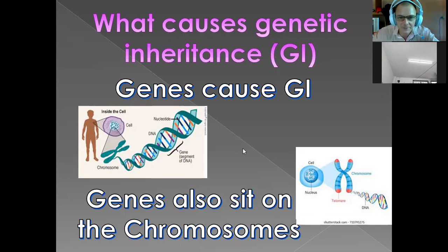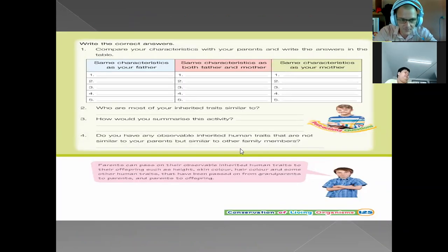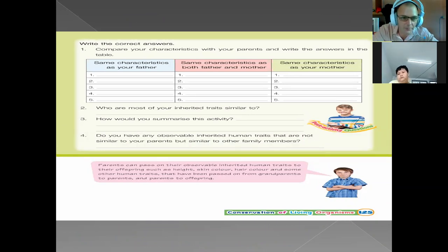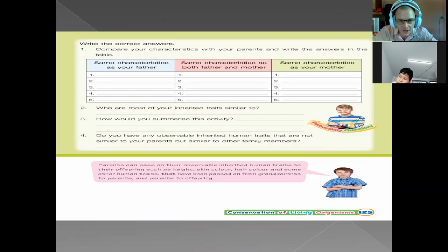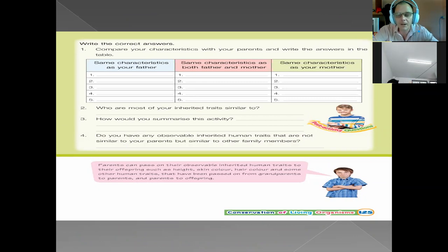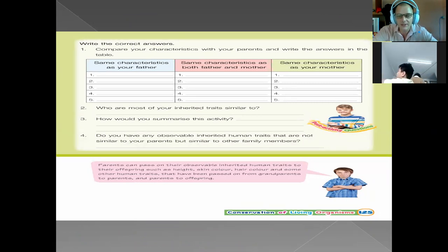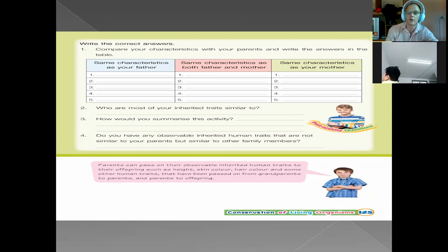Let's quickly look at an example where you can also talk to me. Write the correct answer: compare your characteristics with your parents and write the answer in the table. Let's get some examples — who can tell me what characteristic you have of your father?